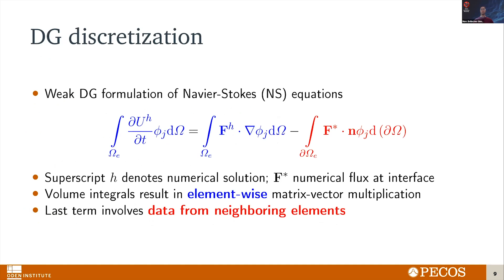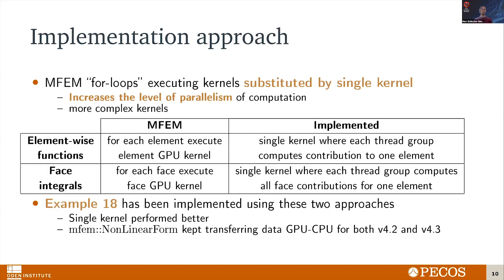This is the weak DG formulation for the Navier-Stokes equations. There are two types of terms. The blue ones are integrals over the volume of the elements — these are very benign terms because they are element-wise functions and can be cast as a matrix-vector multiplication, which is very efficient. Then the red term is an integral over the faces of the element, and can also be cast as a matrix-vector multiplication, but it's more complex because we need information from neighboring elements. We saw an opportunity to increase the level of parallelism within the GPU here.